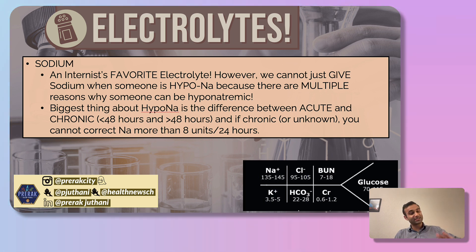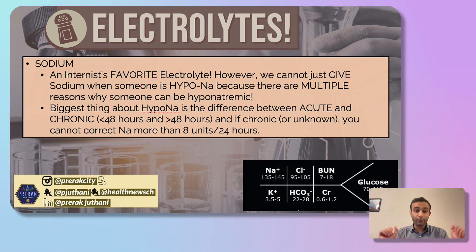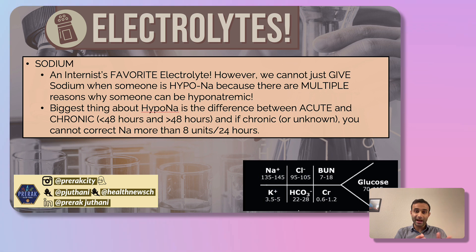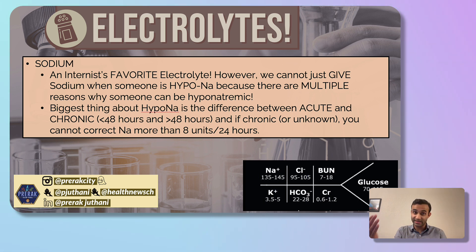I won't get too deep into the nuances — I'll make a separate video about hyponatremia later. The biggest takeaway from a high-level standpoint is: know if someone has low sodium, and know whether that developed within 48 hours or has been present longer. If it developed within 48 hours, you can usually correct it more quickly. But if it's been there longer than 48 hours, you have to correct it more slowly, because you'd be worried about osmotic demyelination syndrome.